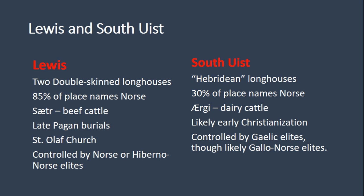To compare the two: on Lewis you have double-skinned longhouses, at least two; on South Uist, Hebridean longhouses at two sites with multiple longhouses. On Lewis, 85% of the place names are Old Norse, whereas on South Uist only 30% are Old Norse — though wherever you have an Old Norse settlement site on South Uist, you have an Old Norse place name for a farm. Lewis trends toward beef cattle; South Uist toward dairy cattle. Lewis has late pagan burials, while South Uist has no pagan burials found but evidence of likely early Christianization. Lewis has St. Olaf's Church. Historical sources indicate Lewis was controlled by Norse or Hiberno-Norse elites, and South Uist by Gaelic or Gael-Norse elites.